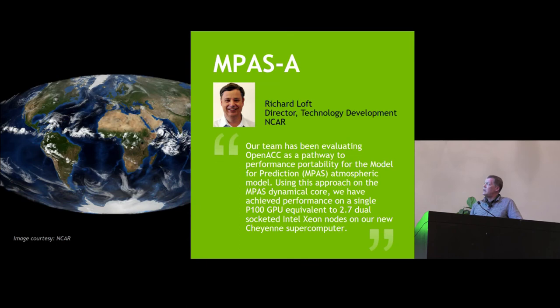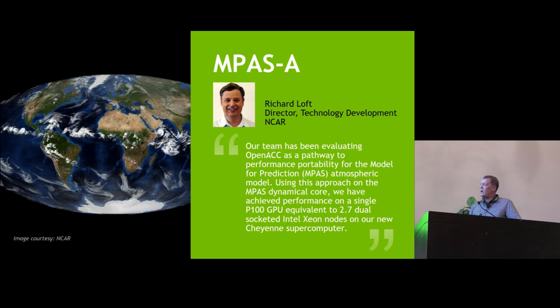MPAS is a next-generation weather and climate model in development at NCAR. So far they've only created the dynamics portion of this code, but on that dynamical core they're seeing a 2.7x speedup on one P100 over all the cores of a dual-socket 36-core Broadwell system. They're now MPI-enabling that code to run in MPI plus OpenACC mode, and soon we'll see results from two and four GPUs on a node, which should be really compelling.